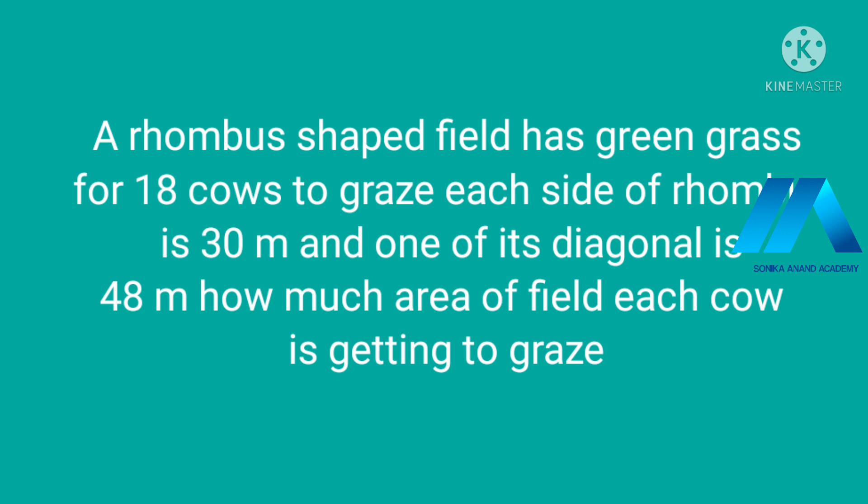Now the question is: A rhombus shaped field has green grass for 18 cows to graze. Each side of the rhombus is 30 meters, one of the diagonals is 48 meters. How much area of field each cow is getting to graze?